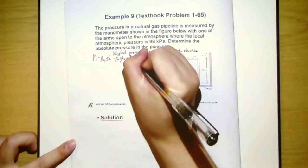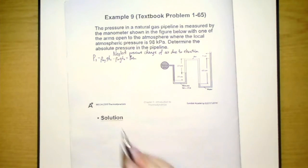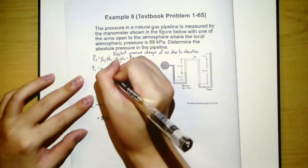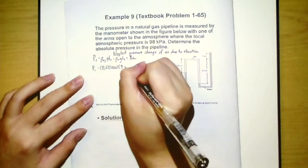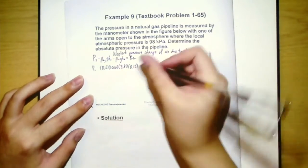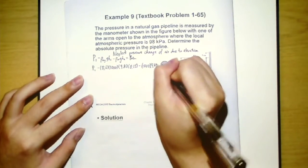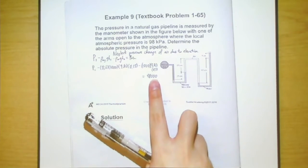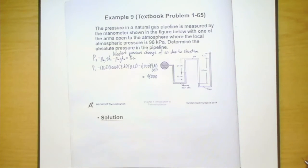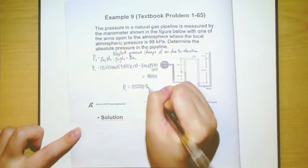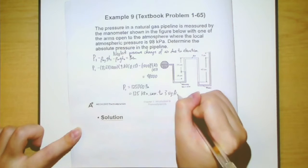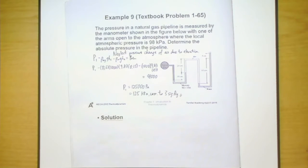Using the established equation and substituting values: the specific gravity of mercury is 13.6, so its density is 13,600 kg/m³. We substitute 13,600 times 9.81 for mercury, minus 1,000 times 9.81 times 0.7 for water, equal to 98,000 Pa for atmospheric pressure. After calculation, we get approximately 125,000 Pa, which equals 125 kPa, correct to three significant figures.